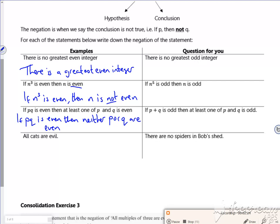All cats are evil. So the opposite to that is at least one cat is not evil. I'm allergic to cats so I'd agree with you all cats are evil.